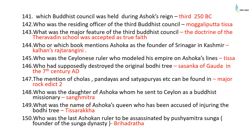The Buddhist council held during Ashoka's reign was the third Buddhist council, in 250 BC at Pataliputra. The presiding officer of the third Buddhist council was Moggaliputta Tissa. The major feature was that the doctrine of the Theravadin school was accepted as the true faith. Kalhana's Rajatarangini mentions Ashoka as the founder of Srinagar in Kashmir. The Silonese ruler who modeled his empire on Ashoka's lines was Tissa.